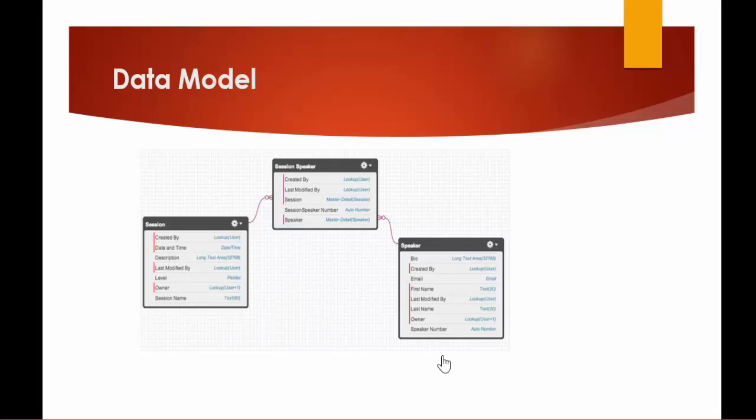A particular session will be taken by a particular speaker, so we will be creating another custom object which will have information about the speaker: first name, last name, email address, bio, etc. We will also be adding a junction object because we want a many-to-many relationship between session and speaker — one session can be given by multiple speakers, and one speaker can give multiple sessions. So we will be creating a Session Speaker junction object.